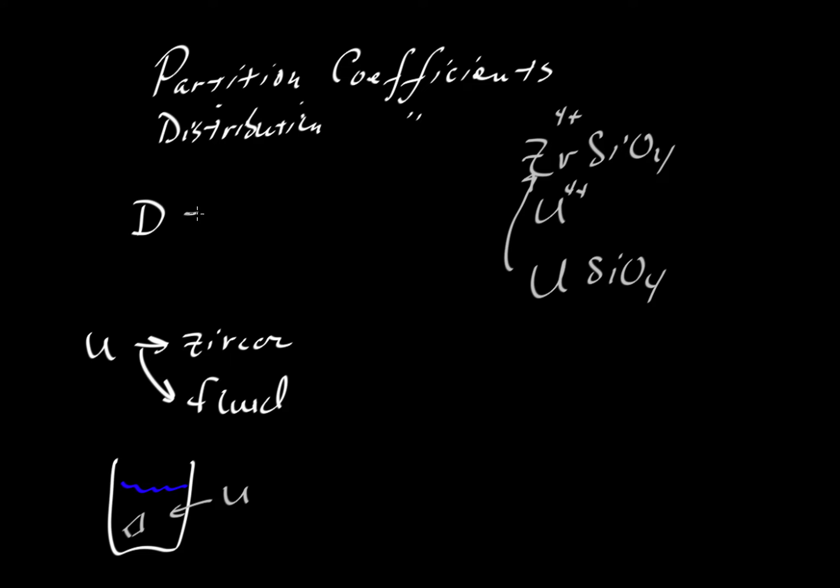We can ask, what would be the distribution of uranium between the zircon and the fluid? We write that as a ratio: concentration of uranium in zircon (C subscript U for uranium in zircon) divided by C subscript U for uranium concentration in the fluid.